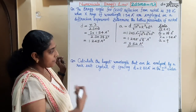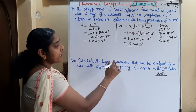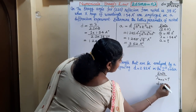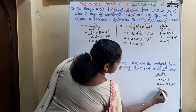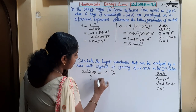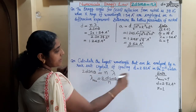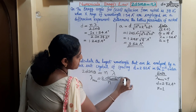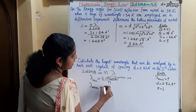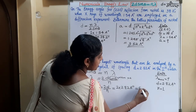Next question: Calculate the longest wavelength that can be analyzed by a rock salt crystal of spacing D equals 2.82 Angstroms in the first order. For lambda to be maximum, N should be minimum (N equals 1, already given) and sine theta should be maximum. The maximum value of sine theta is 1, so the longest wavelength equals 2D divided by 1, that is 2 into 2.82 Angstroms, giving 5.64 Angstroms.